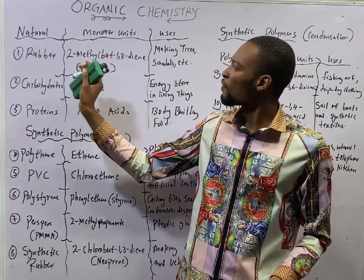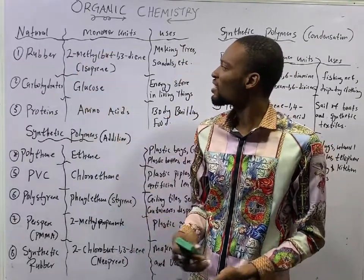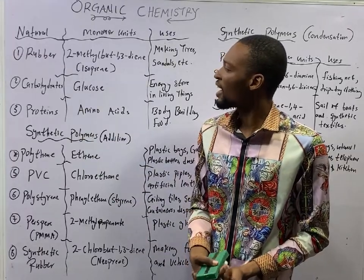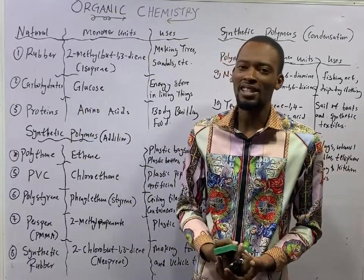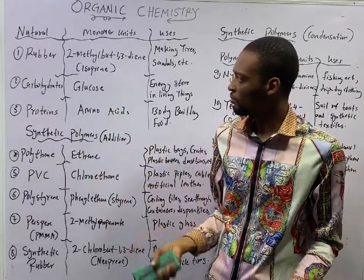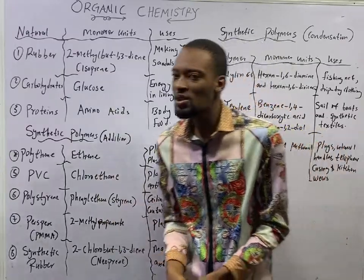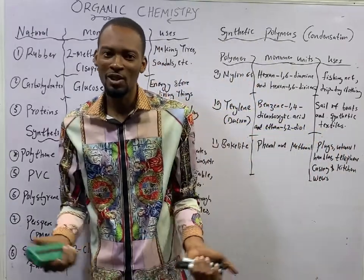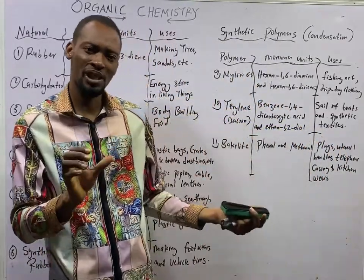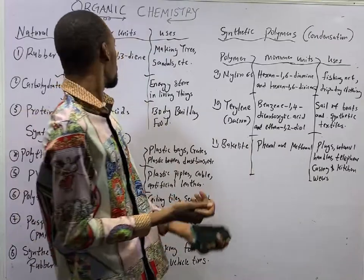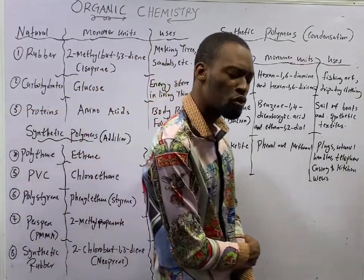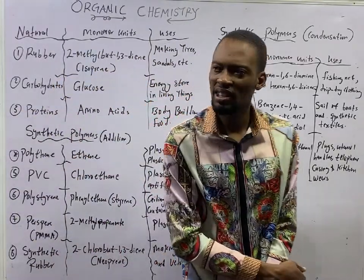The monomer unit of rubber is 2-methylbuta-1,3-diene, that is isoprene. This is a very common question in JAMB. What is the monomer unit of natural rubber? The unit of natural rubber is isoprene, and isoprene is 2-methylbuta-1,3-diene.